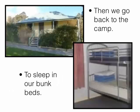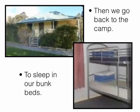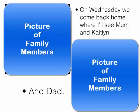It's important to let James know that after the trip to Sovereign Hill they are going back to Blackwood, because he may expect that they would go back home or back to school. So it's important to let him know they'll be going back to Blackwood and sleeping in the bunk bed again for another night. Most importantly, James needs to know that on Wednesday they come back home, where he'll see his mum, his sister Caitlin, and his dad — and this takes away his anxiety about when he's going to see his family again.